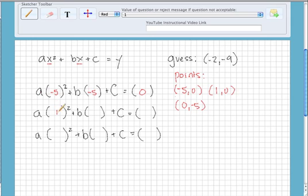Our next point is 1, 0. So we're going to do the same thing down here. 1 for x and 0 for y. And then our next point is 0, negative 5. So 0 is for x, and then negative 5 for y.